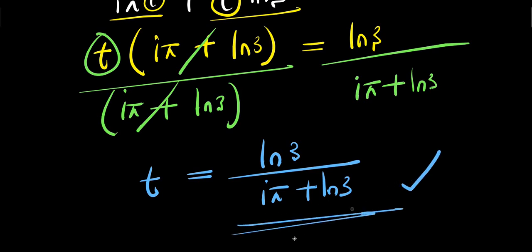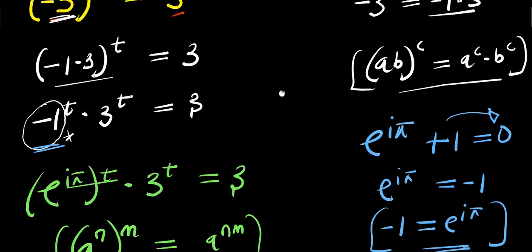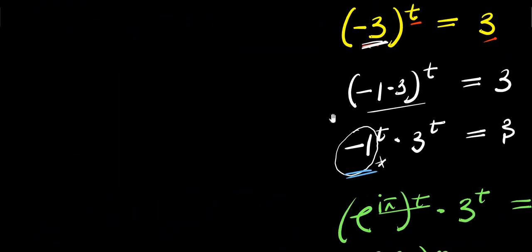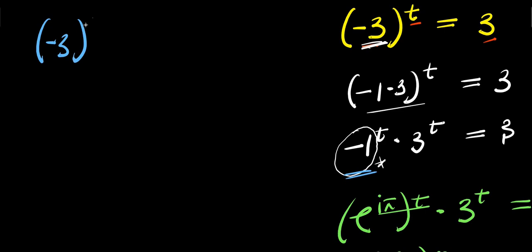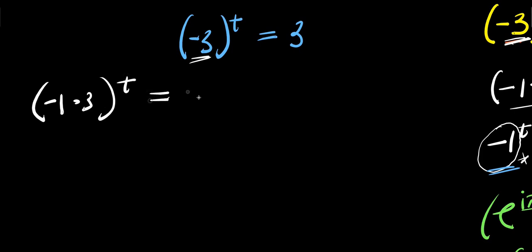So this is our solution based on this particular method. Now let's consider a second method of solving this particular problem. We again have negative three raised to the power of t equals three, and we replace negative three with negative one times three raised to the power of t, giving negative one times three raised to the power of t equals three.